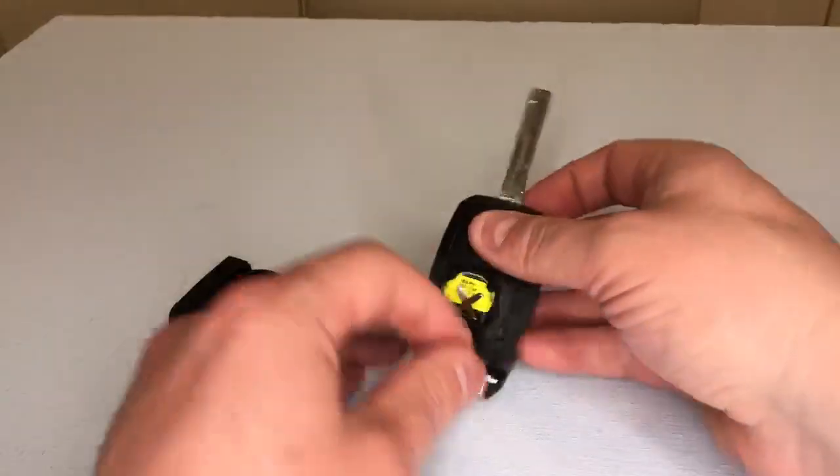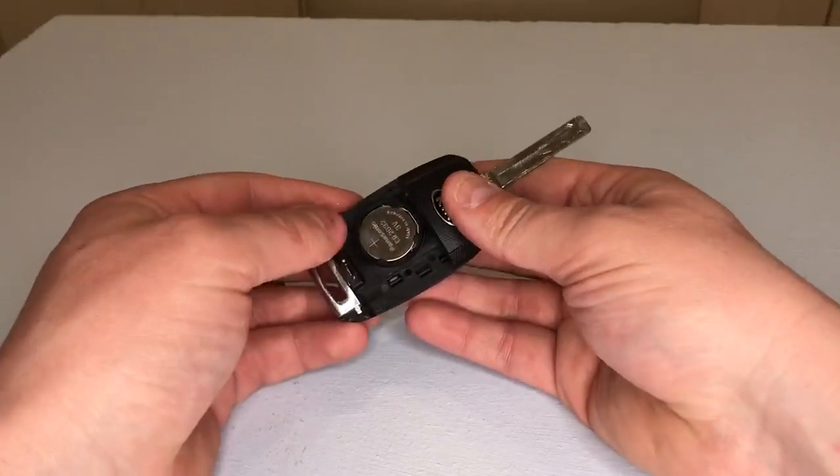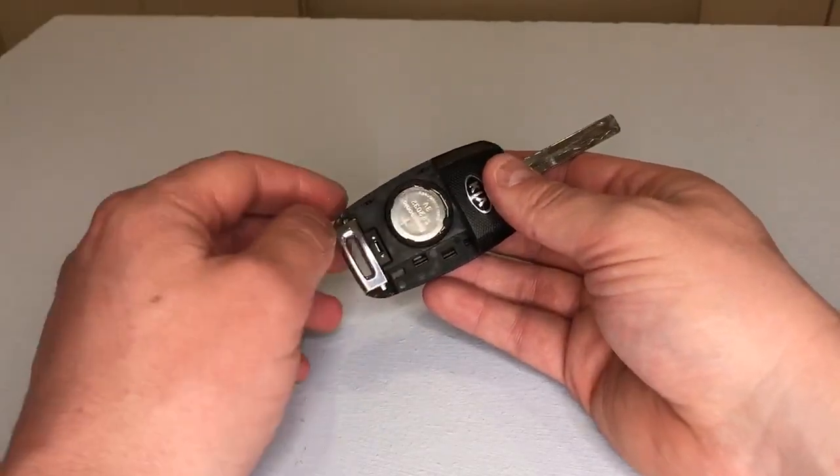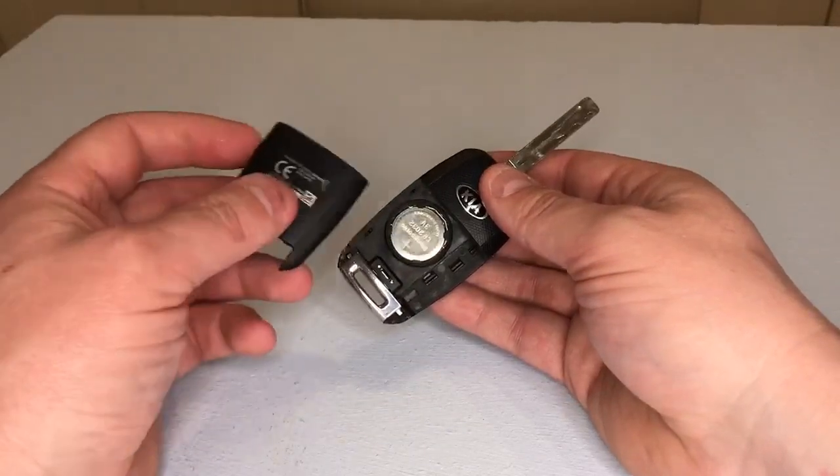We get our new key fob battery and simply pop it back into the housing like so. We make sure that the writing on the key fob battery is facing upwards so we know it is in its correct location.